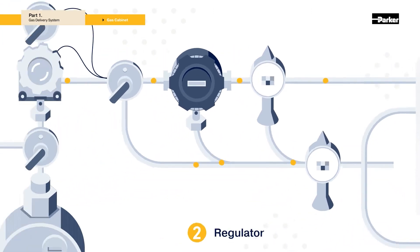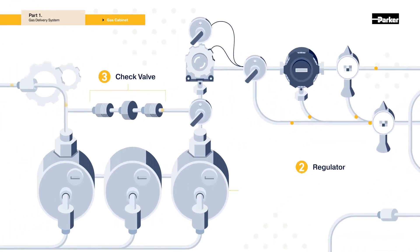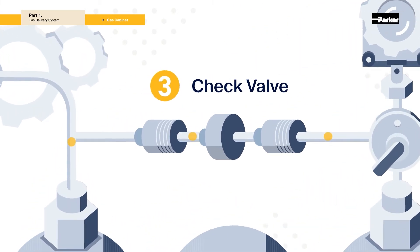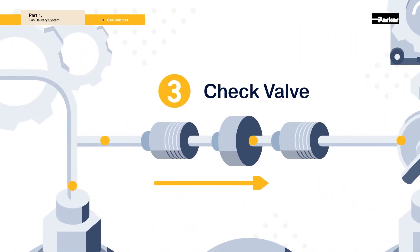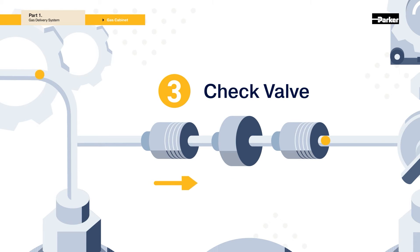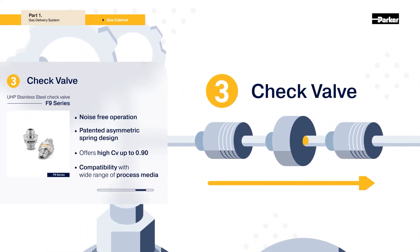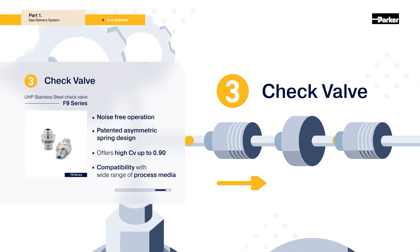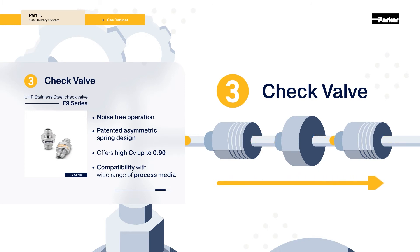The check valve is a valve that operates to prevent fluid from flowing in the opposite direction, and is essential for the stability of the gas delivery system. The check valve recommended by Parker is the F9 series, which features noise-free operation with a patented spring design.